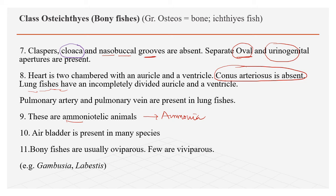Air bladder is present in this kind of fishes and is helpful in buoyancy — it helps the fish maintain its position in the water.